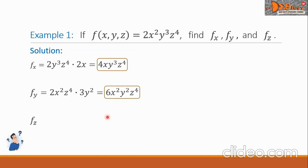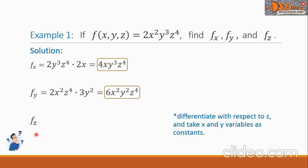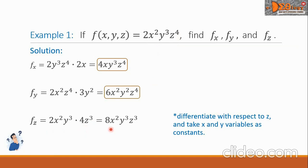Next is f sub z, the partial derivative of f with respect to z. We differentiate with respect to z, taking x and y as constants. The derivative is 2x squared y cubed times the derivative of z to the 4th power, which is 4z cubed. Simplifying, f sub z equals 8x squared y cubed z cubed.